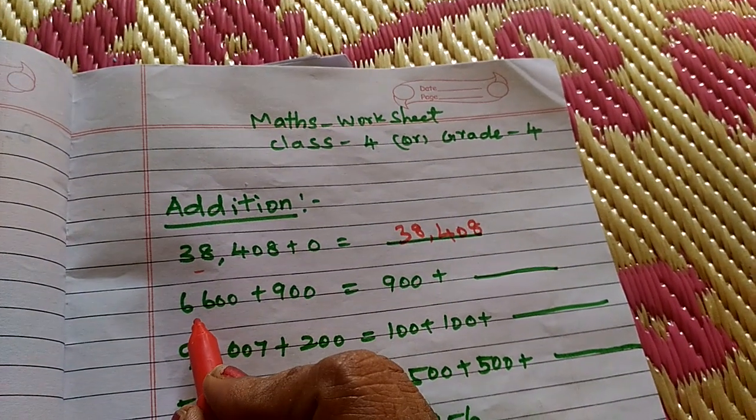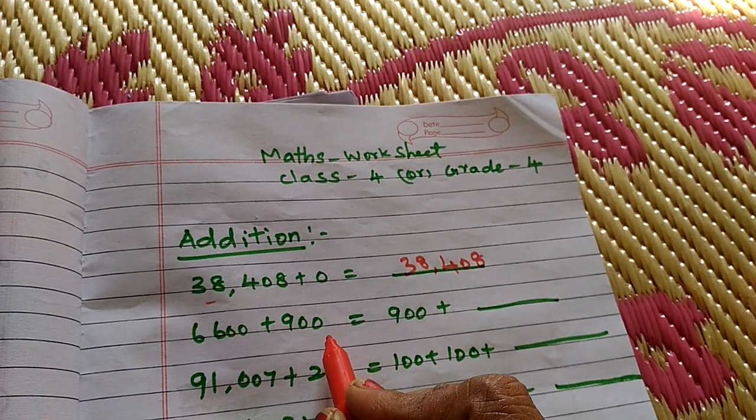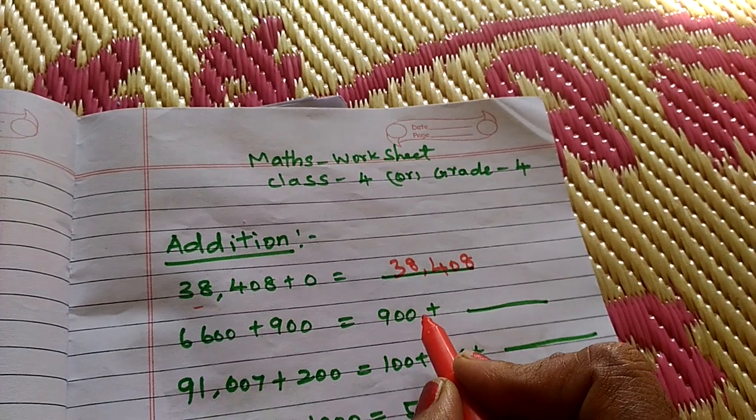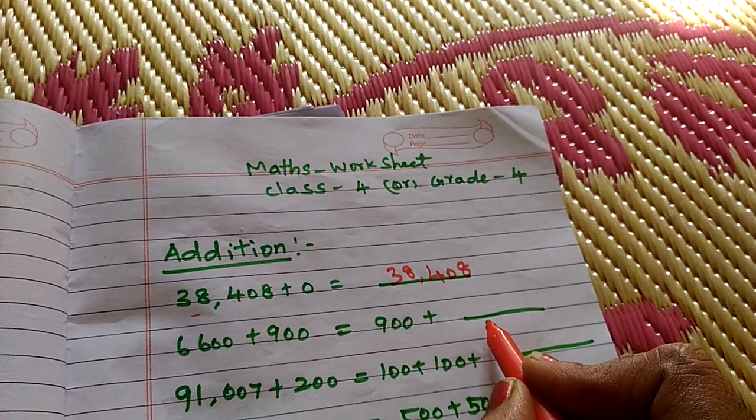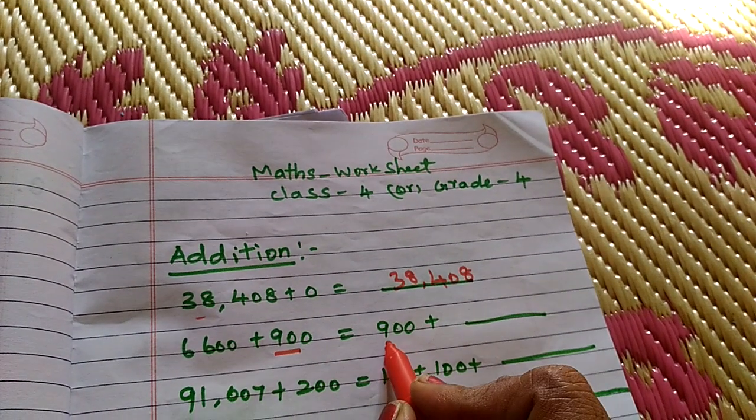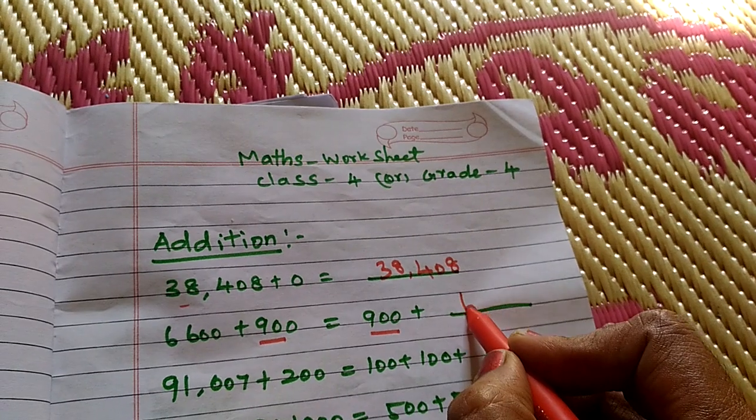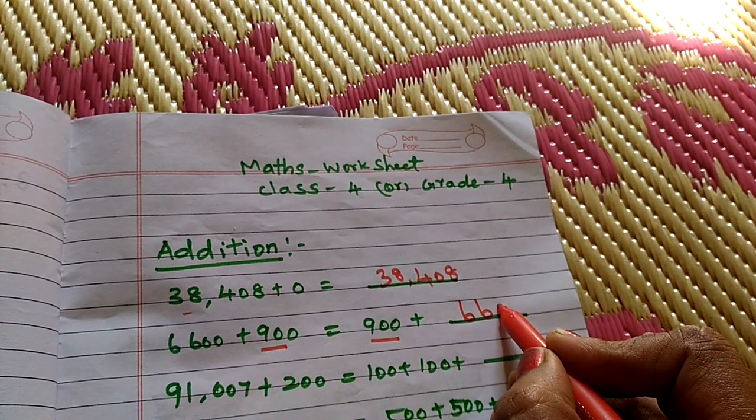Then, 6,600 plus 900 equals 900 plus dash. Already 900 here. Then, 6,600. I write 6,600.